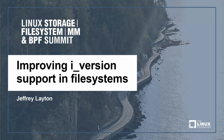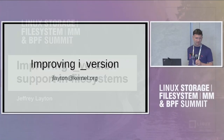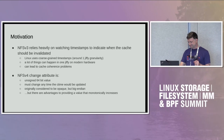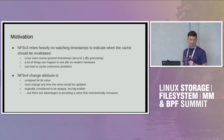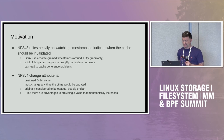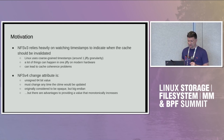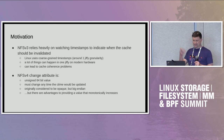This talk is about improving iVersion. iVersion is the thing we have in the iNode struct that tracks changes. The motivation for this is NFS. V3 relies heavily on watching timestamps, and Linux uses coarse-grained timestamps when it updates the C time, M time, or A time.